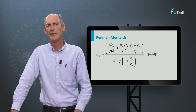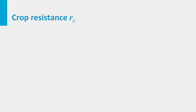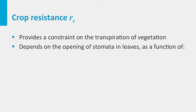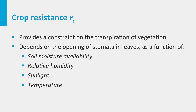Monteith expanded the open water equation of Penman to a vegetated area. He introduced the crop resistance RC, which provides a brake on the transpiration of vegetation as a result of environmental constraints. The crop resistance depends on the opening of stomata in the leaves, which reacts to the availability of moisture in the soil, relative humidity, sunlight for photosynthesis and temperature. For more details, it is worth reading the paper by Lan Wang, which is open access.